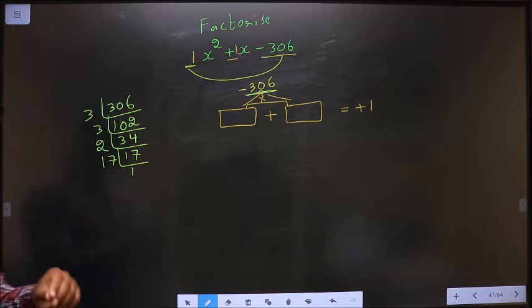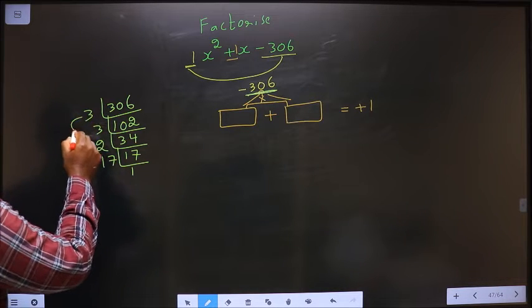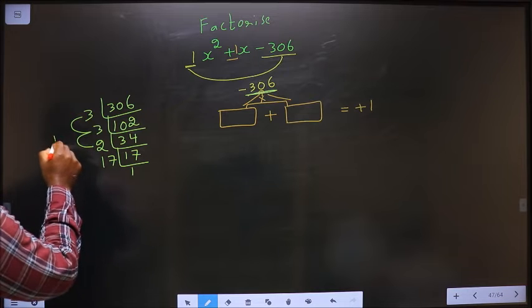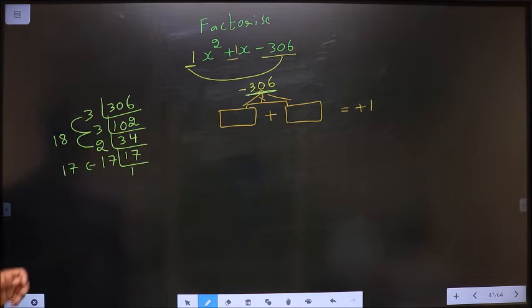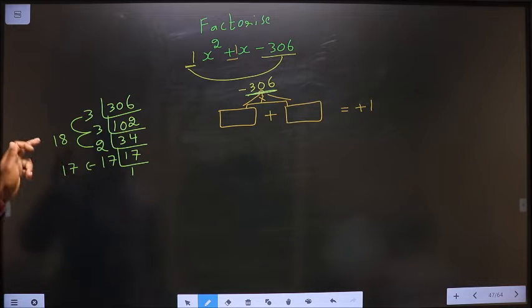So the two numbers are: 3 × 3 = 9, 9 × 2 = 18, and 17. 18 - 17 = 1, and 18 × 17 = 306.